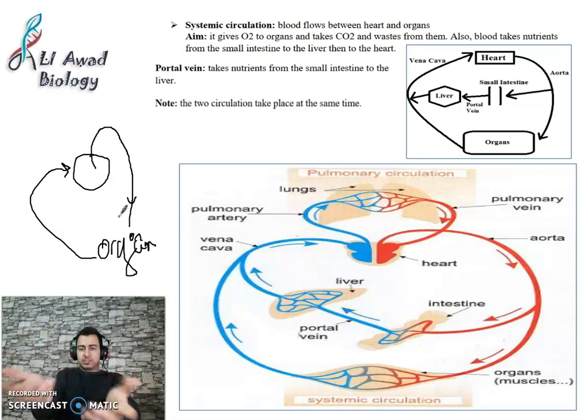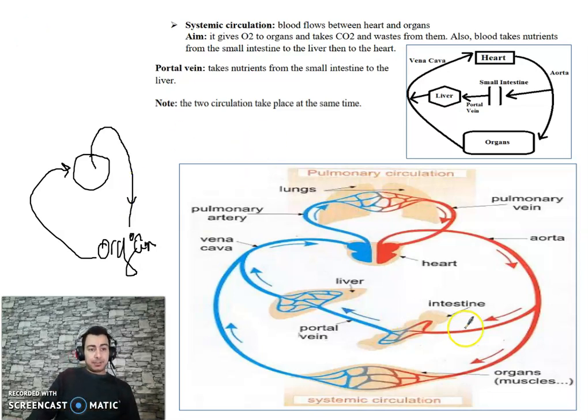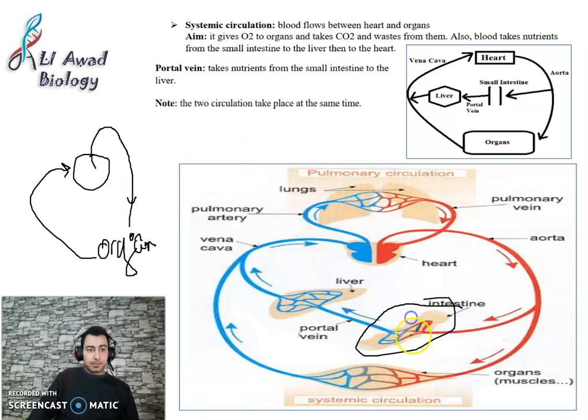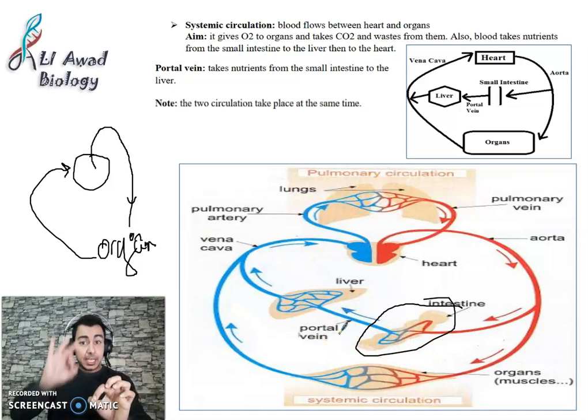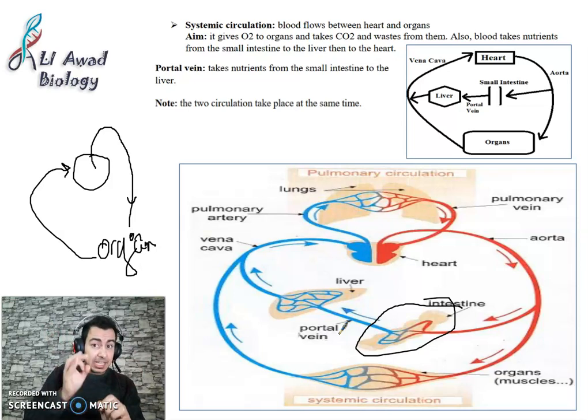The second aim is to take nutrients from the small intestine. The blood takes nutrients from the small intestine.